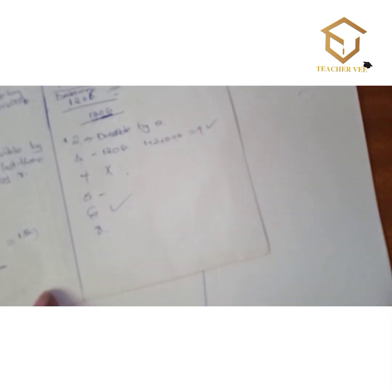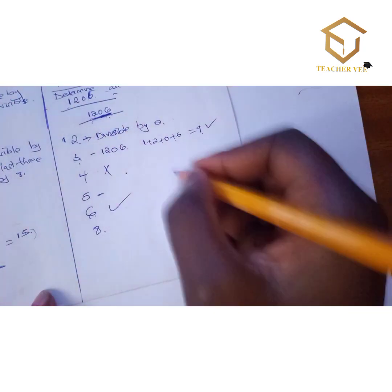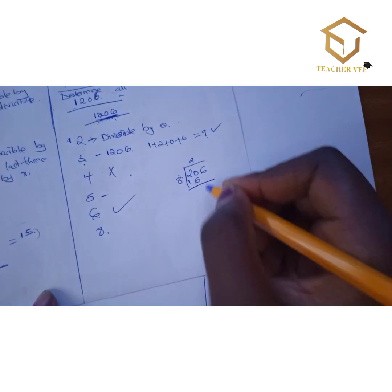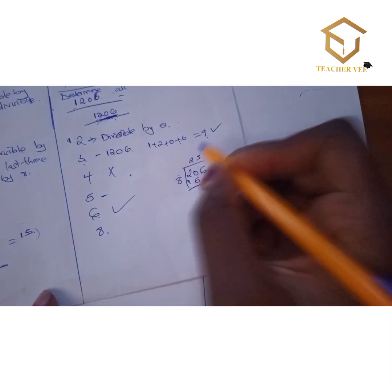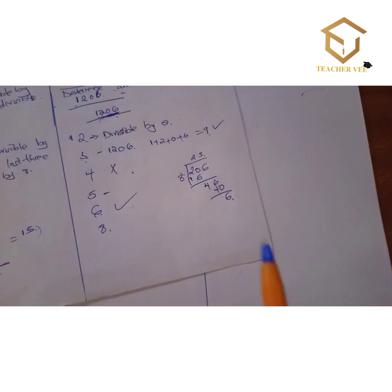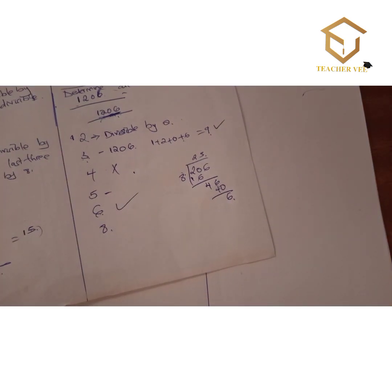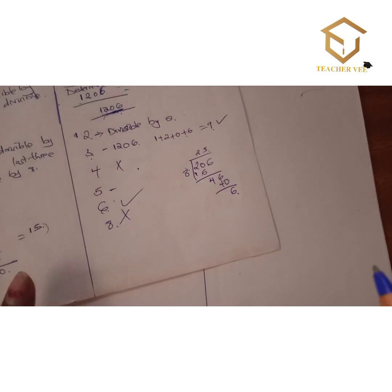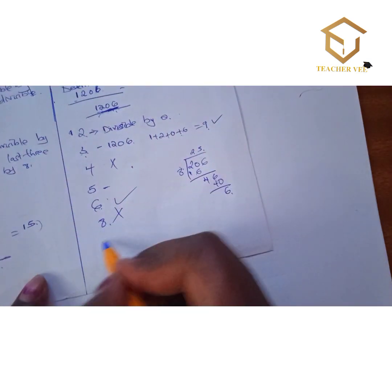Divisibility test of 8: take the last three digits of the number. Our last three digits are 206. When you divide 206 by 8, you get 25 with a remainder of 6. Since there is a remainder, 1206 is not divisible by 8.